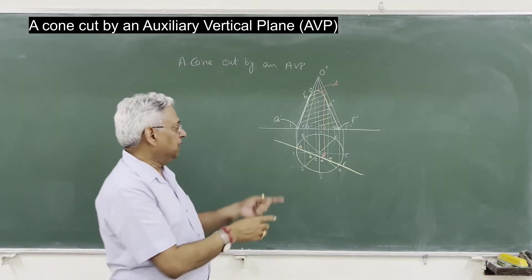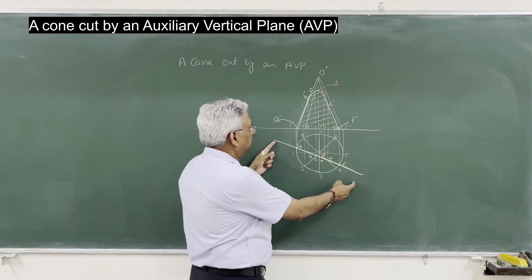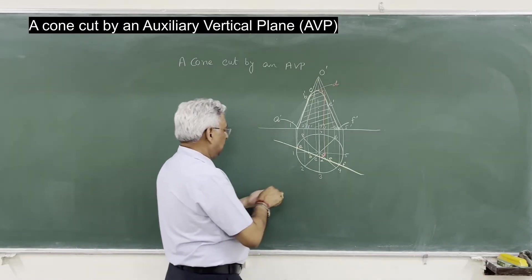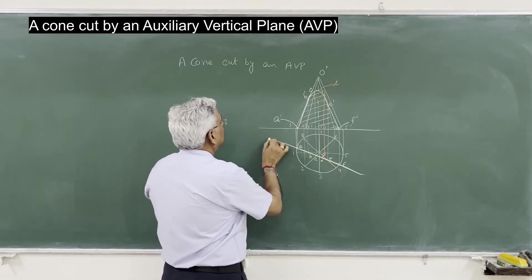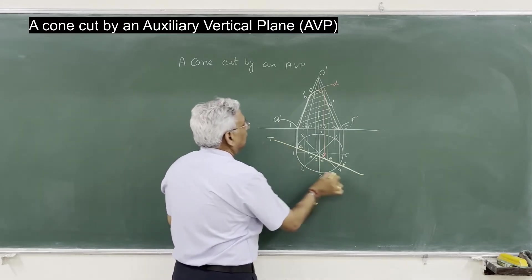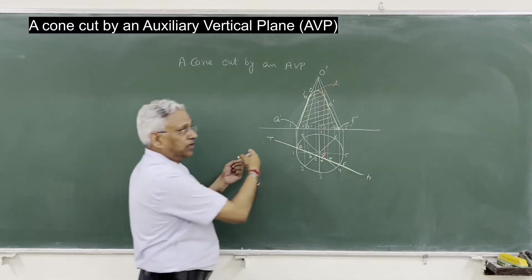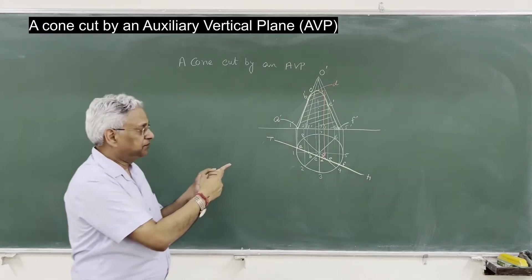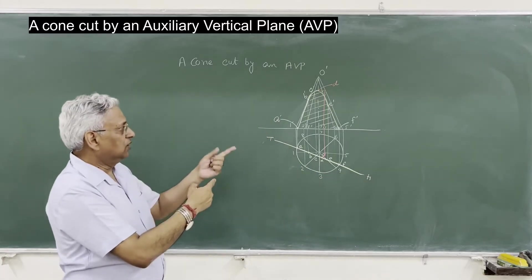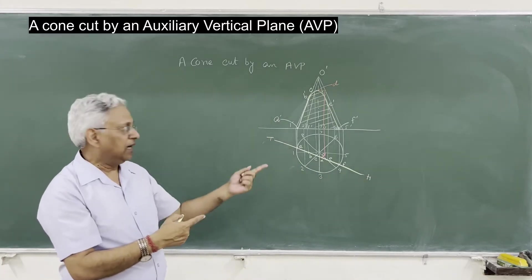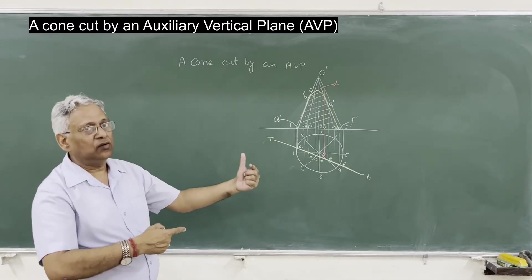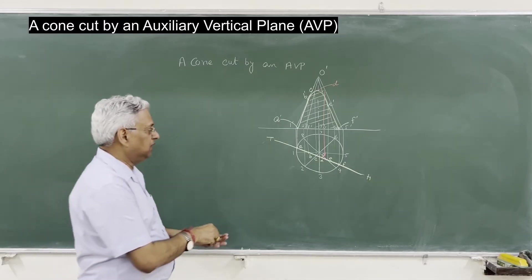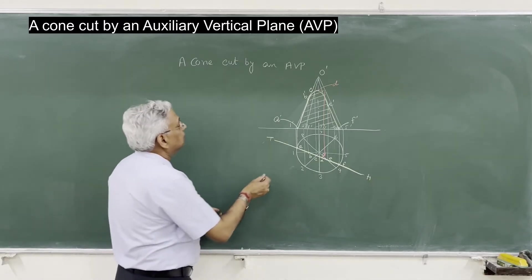This is the H-T of the vertical plane. So if you take a plane parallel to this H-T line, then only you will get the true shape of the cut section.